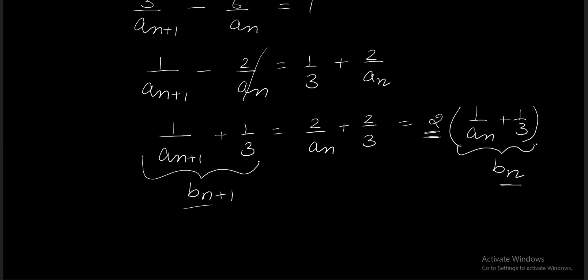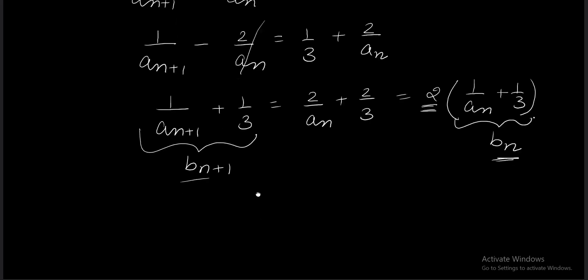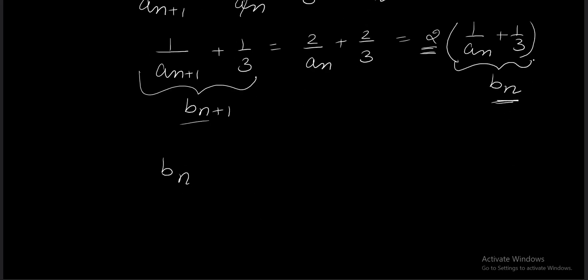If it is 2, then this sequence b1, b2, b3 is going to be a GP. The common ratio is 2. What is the first term? Setting n=0, we get 1/a0 + 1/3 = 1/3 + 1/3 = 2/3. So the first term is 2/3.